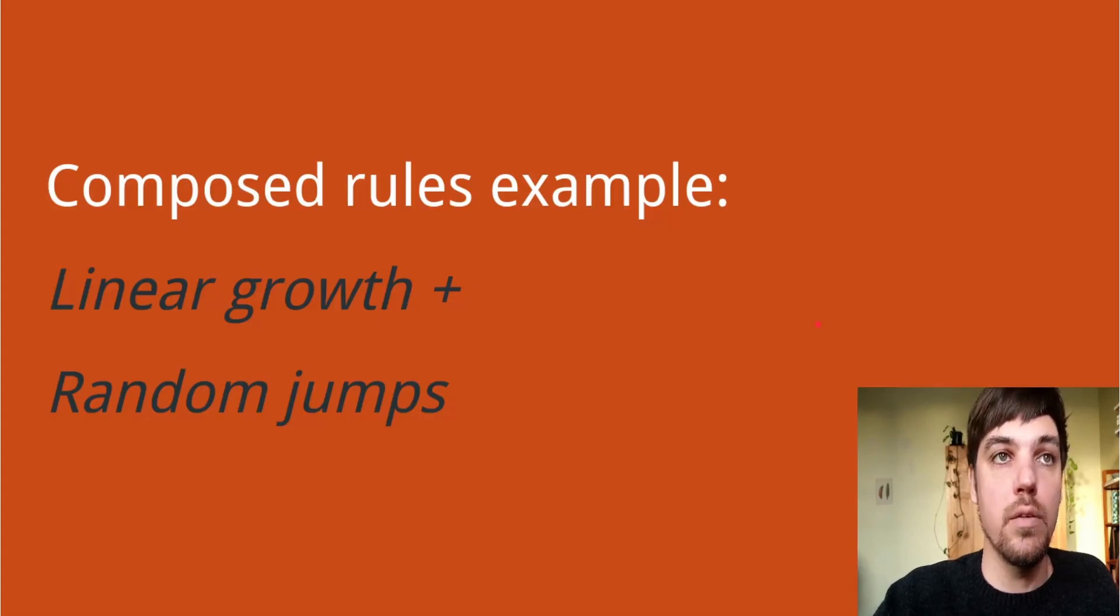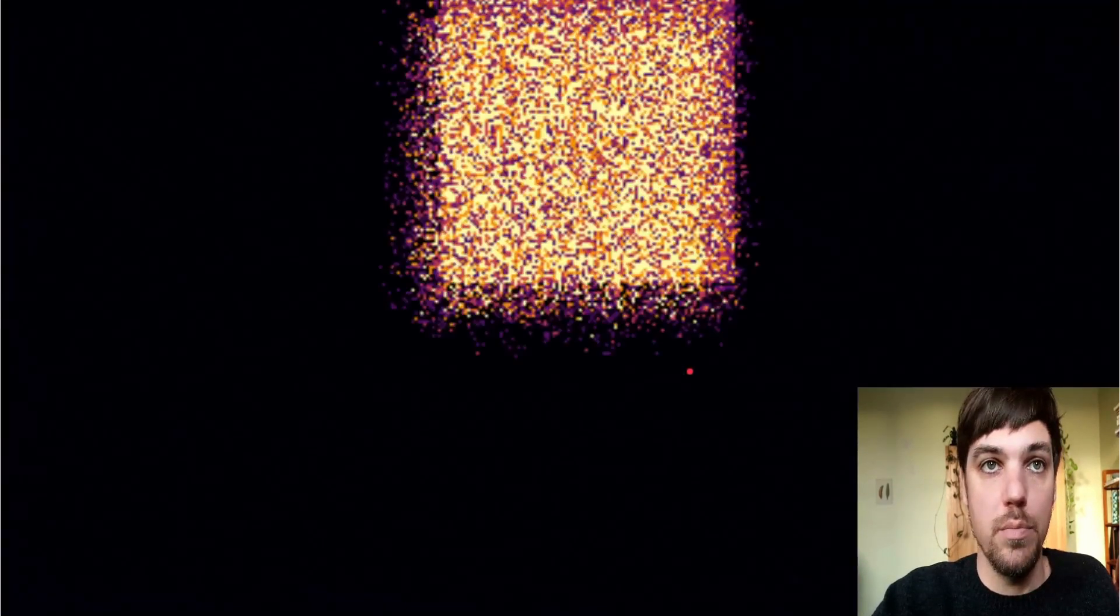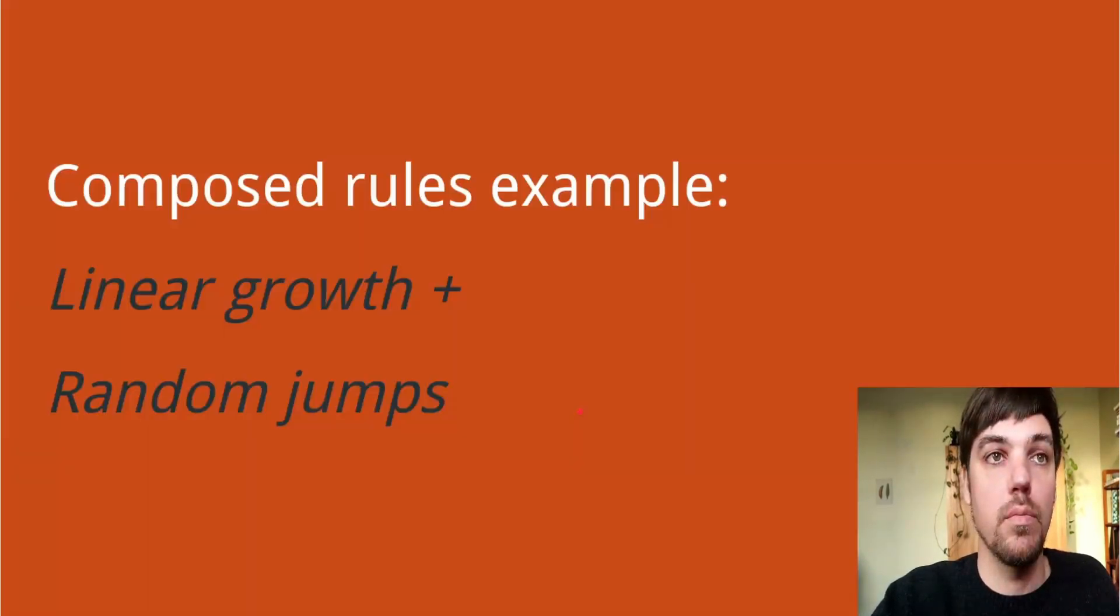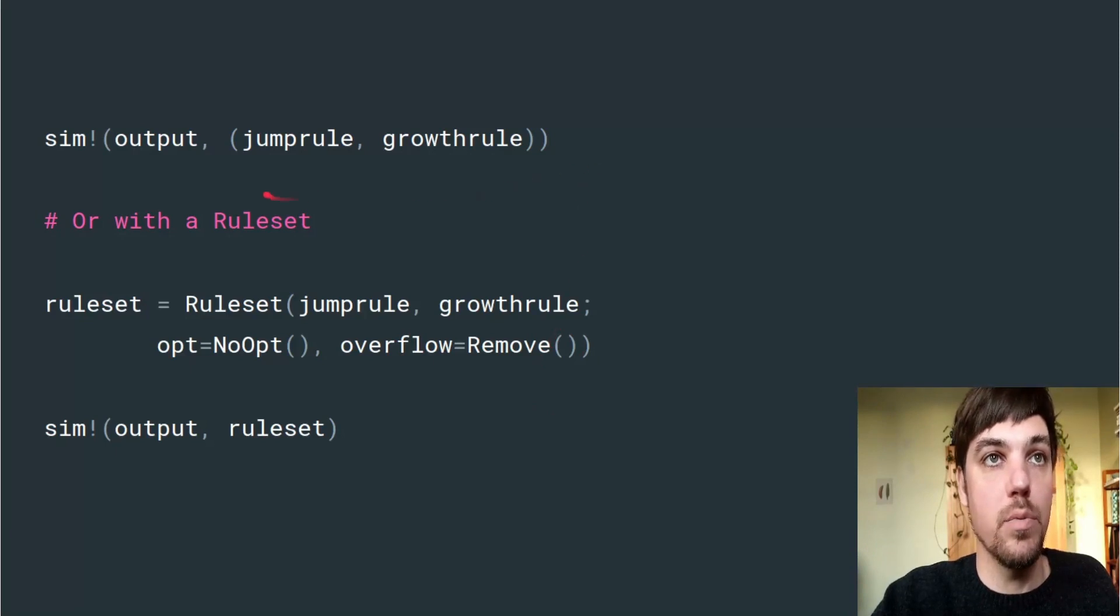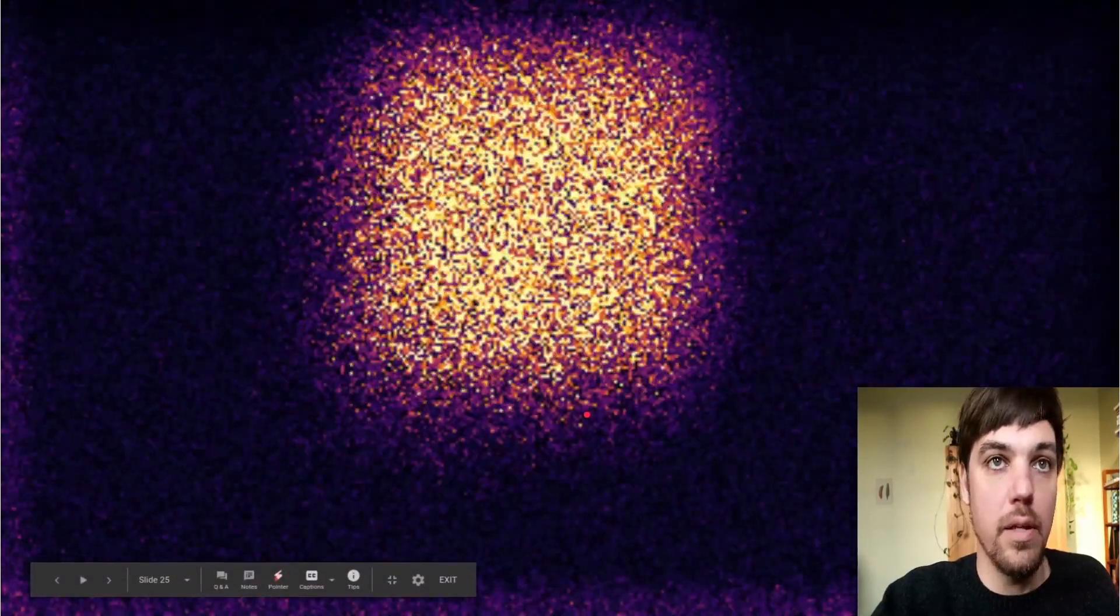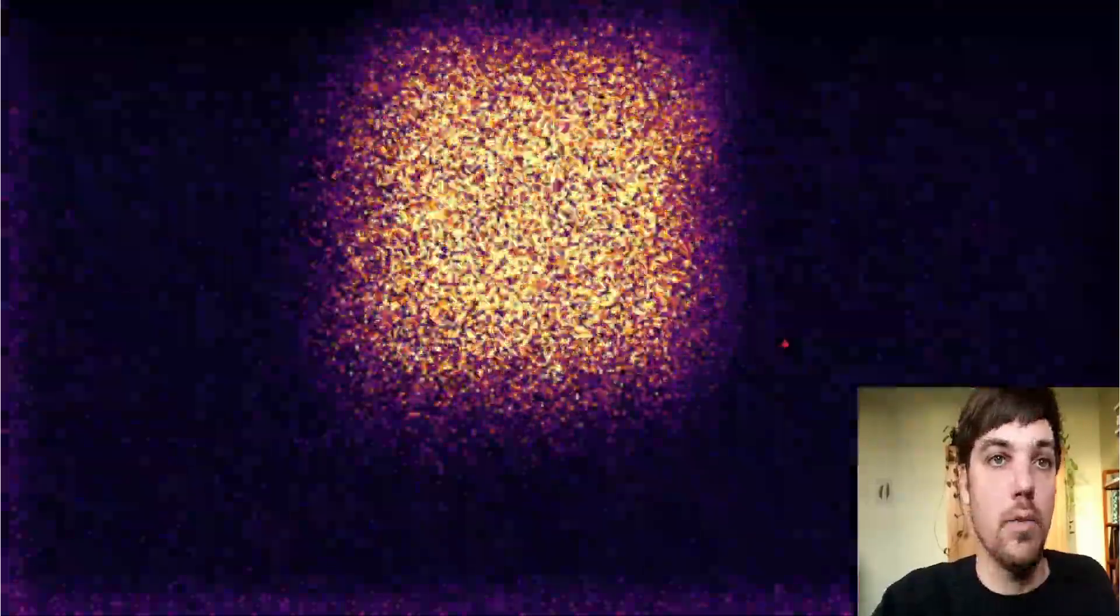We can also combine rules and compose them into a composed model. We'll combine the linear growth rule and the random jump rule. We can do that by using a tuple or combine them in a rule set with some other simulation flags and run that. The result is a combination of both rules. We have growth increasing in the values and movement to the bottom left.